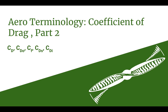Welcome to Part 2 of the Arrow Terminology video on the Coefficient of Drag from the Ultralight Airplane Workshop. If you have not seen Part 1 yet, there is a link in the upper right-hand corner you can click on to go see that. In Part 1, we talked about boundary layer and how drag is the process of transferring momentum from an object to the air when the object is moving through the air. We also talked about skin friction, the coefficient of skin friction, and pressure drag.